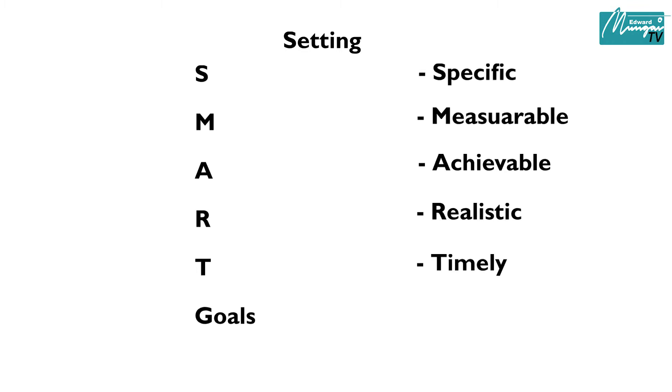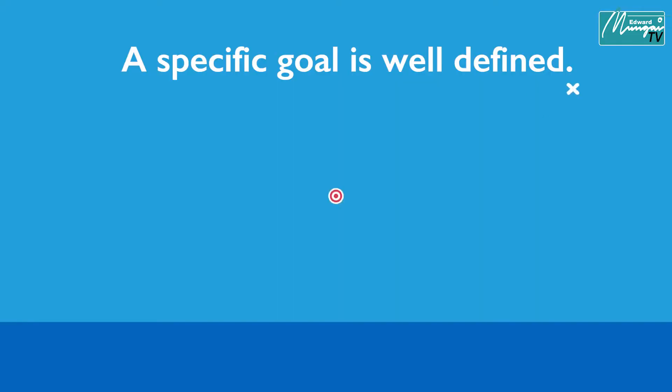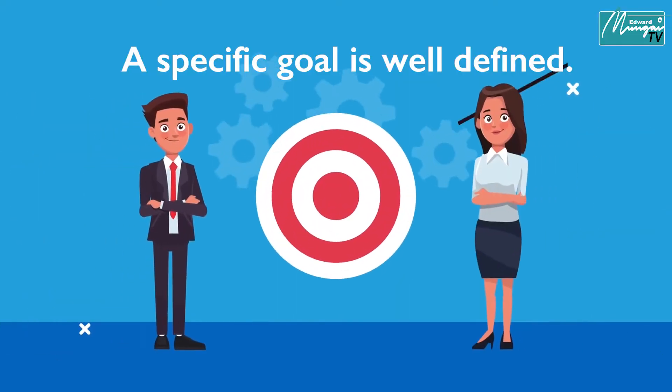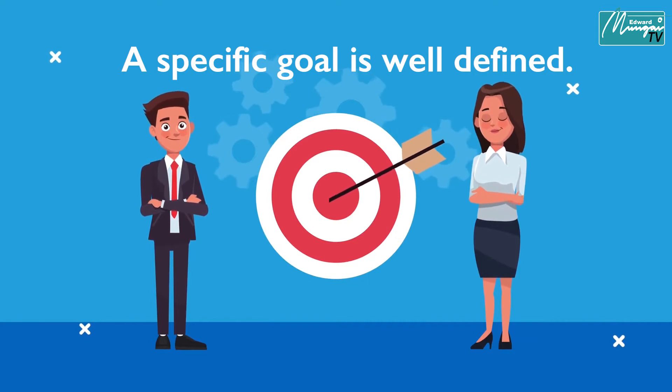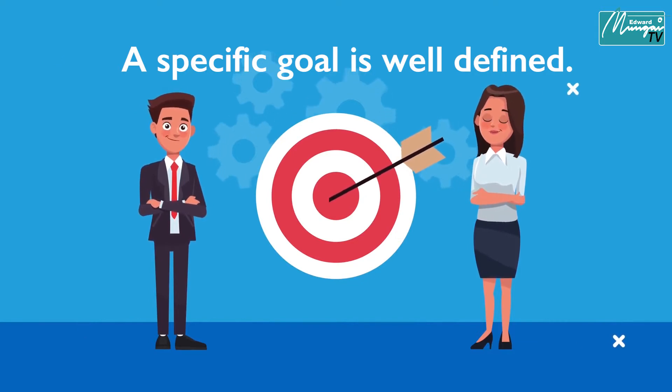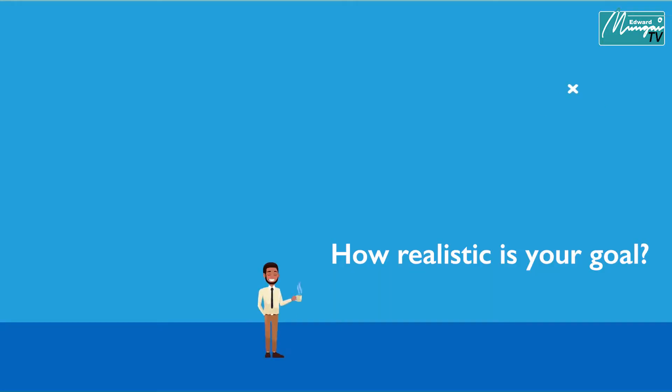What is a specific goal? A specific goal means that it is well defined. Sometimes we have very ambiguous kinds of goals. Improvement cannot be measured, but if you put a number to it, then it means that you can be able to measure.